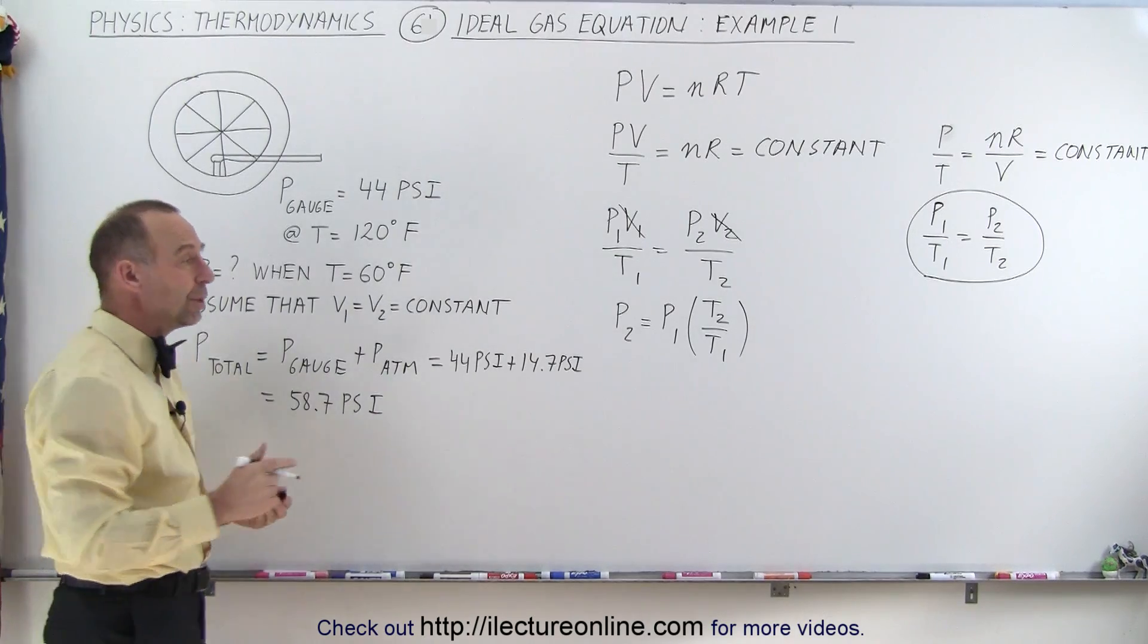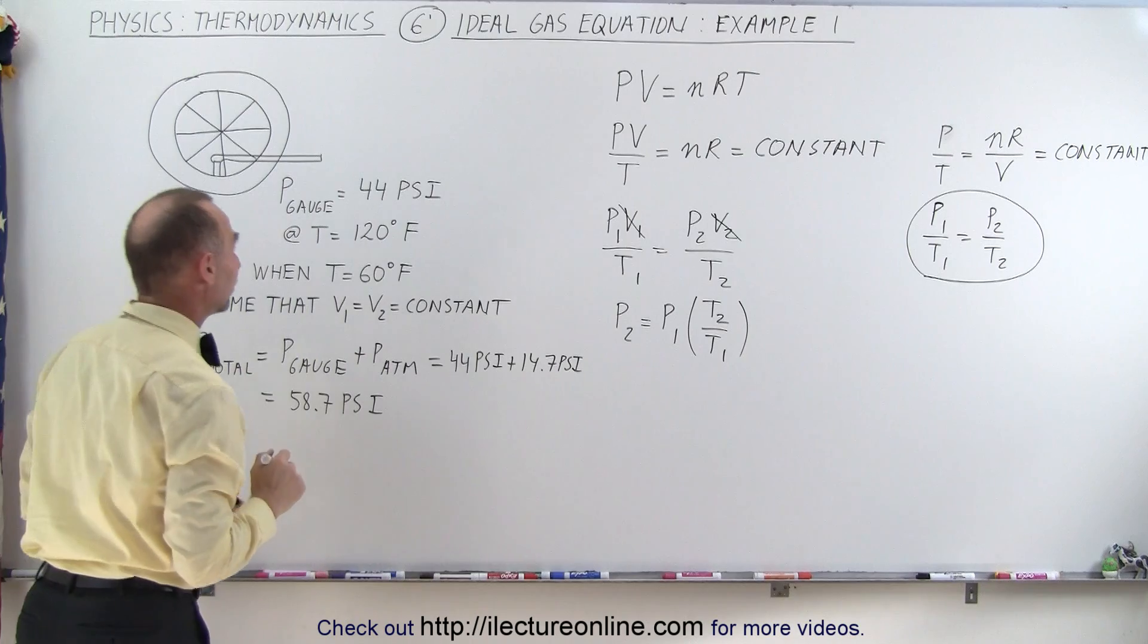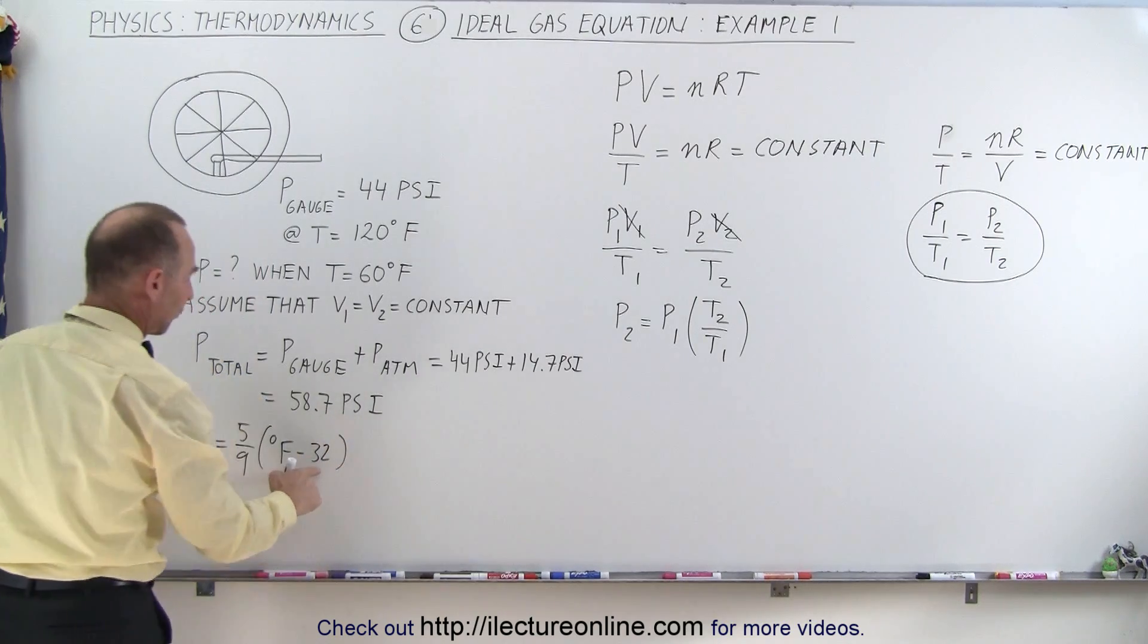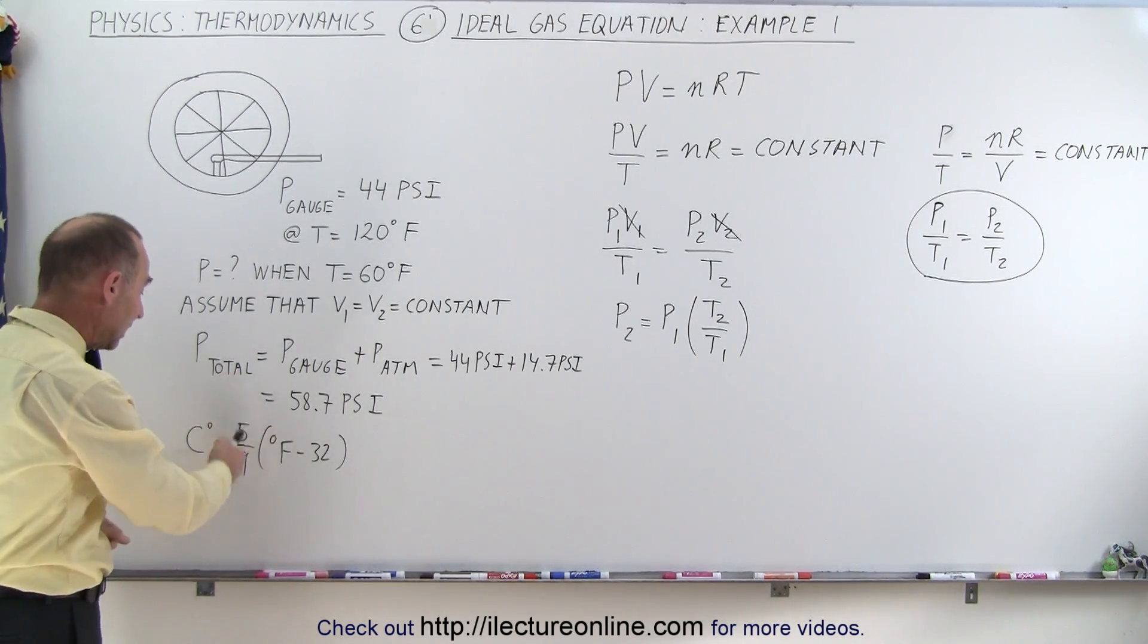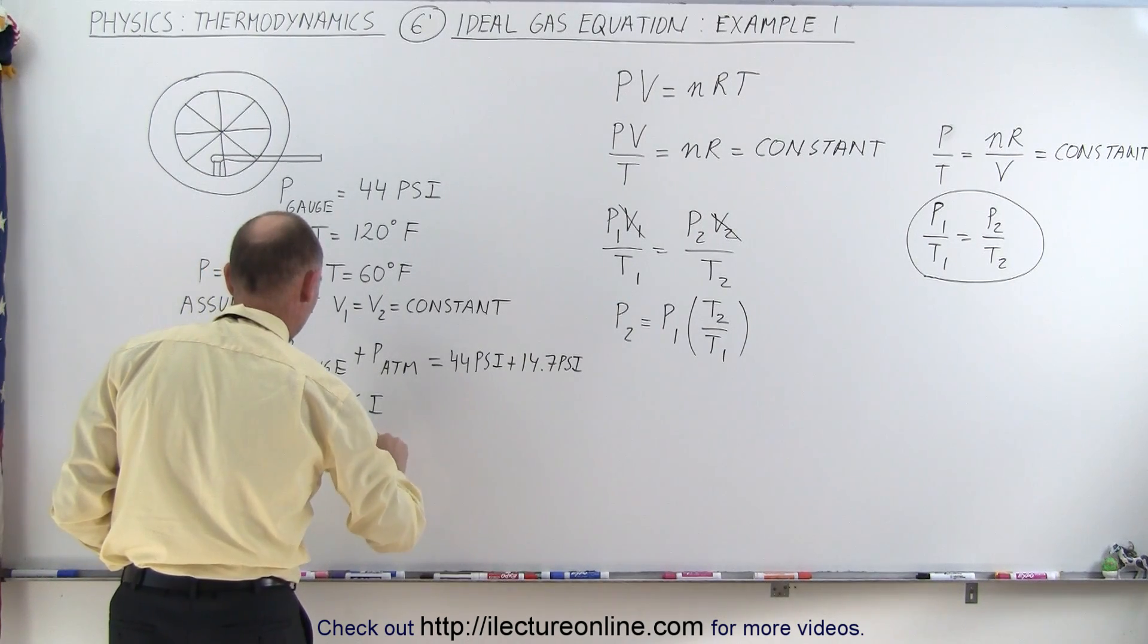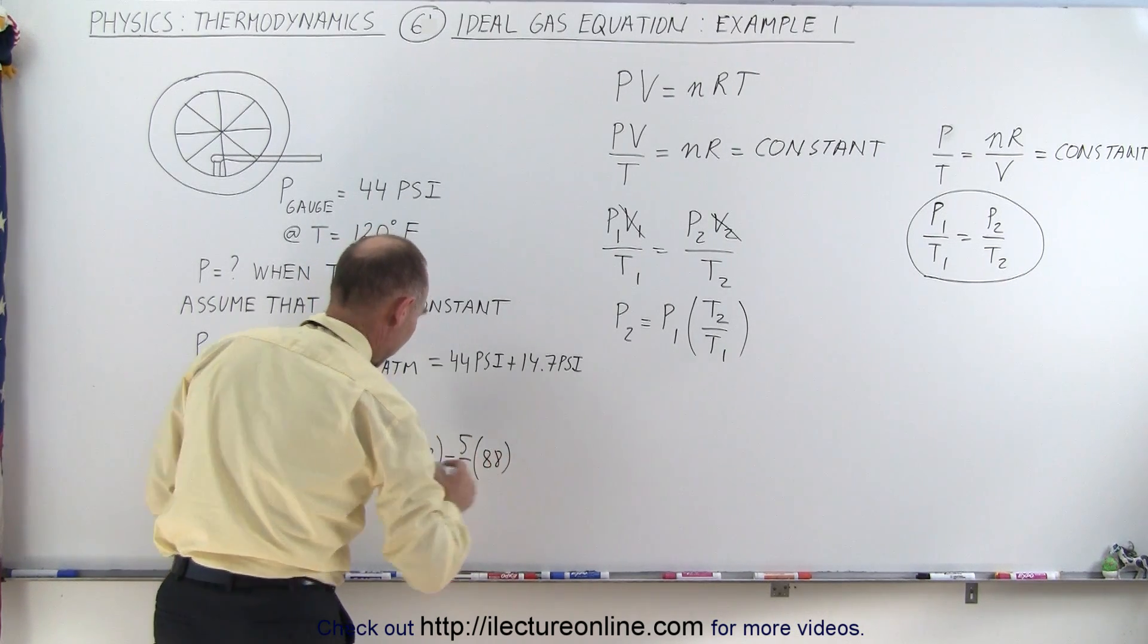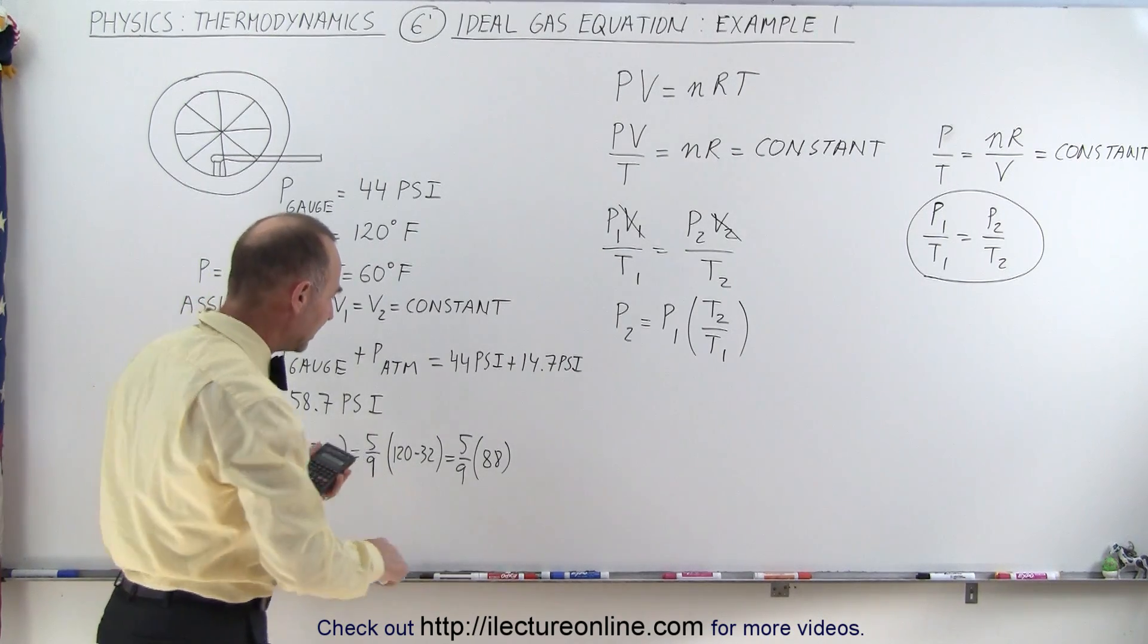But with the temperature, we don't have that luxury. We really do have to convert it to Kelvin, which means we first are going to convert the temperature to centigrade degrees, and now we can convert it to Kelvin degrees. So the temperature in centigrade degrees is equal to 5 over 9 times the temperature in Fahrenheit degrees minus 32. We first have to convert because the freezing point of water happens at 32 degrees Fahrenheit, and then we convert via the ratio of centigrade degrees to Fahrenheit degrees. When we do that, we get 5 over 9 times 120 minus 32, which is 5 over 9 times 88. So we have 88 divided by 9 times 5 equals 48.9 degrees centigrade.